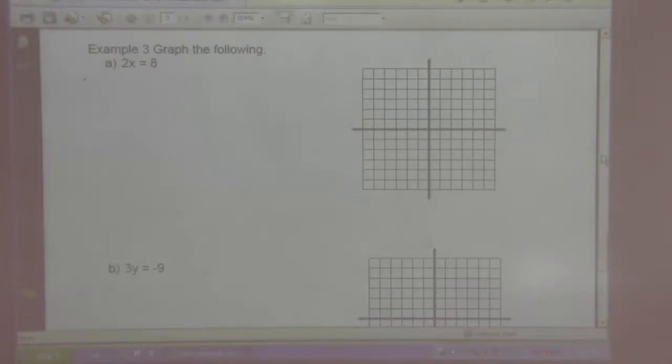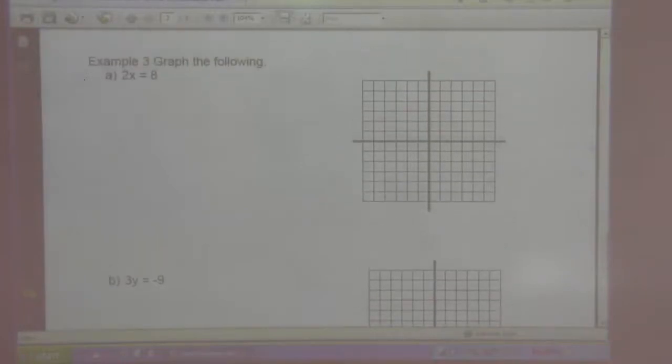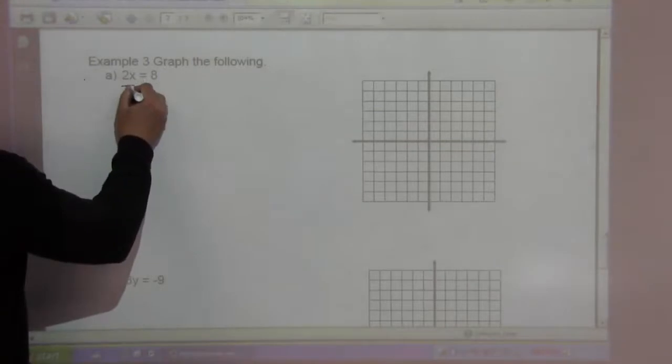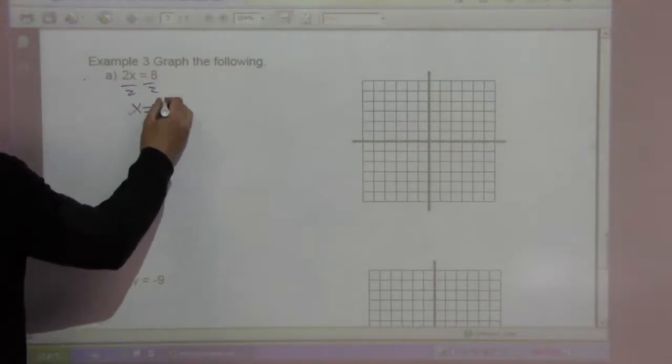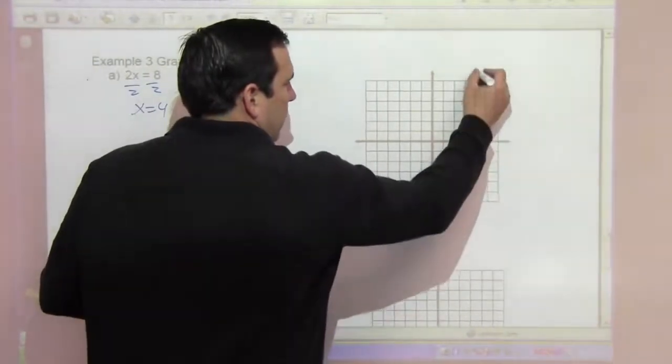Last page here. We're going to graph 2x equals 8. If I divide by 2, I have x equals 4. So x equals 4 is a vertical line that goes through 4, 0.